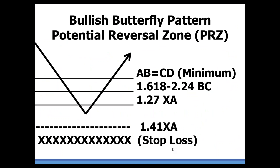Look at the illustration of the potential reversal zone. Normally the harmonic support stacks up like this with a minimum AB equals CD measurement, followed by our BC complementary projection, and then the primary 1.27. The key is to see that reversal right at the 1.27 or just beyond, while not taking out the 1.41. That's where we put our stop losses, right beyond there.